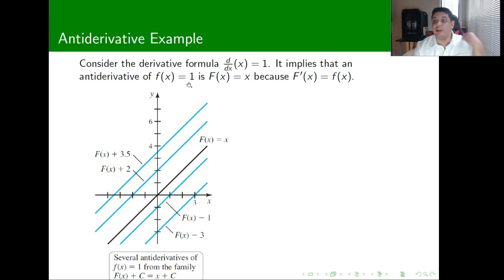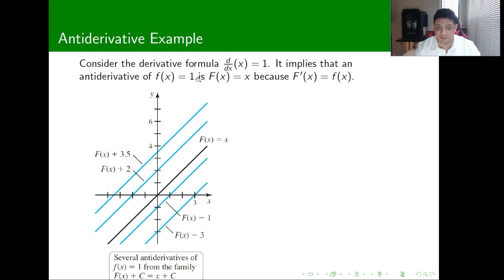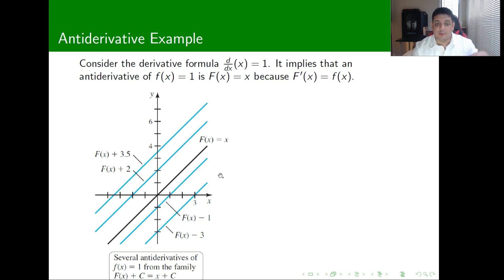From here I can return to the probable function where this was derived, which is x. Notice that if I take the derivative of big F(x) = x, then I'm going to get 1. Now, there are a lot of functions that produce that. So if I take x, or x plus 2, or x plus 3.5, or x minus 1, or x minus 3, when I take the derivative of all those functions, it's always going to be 1.